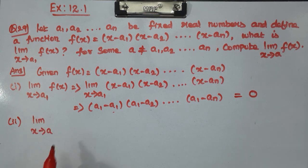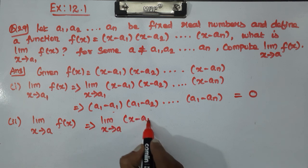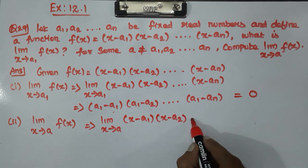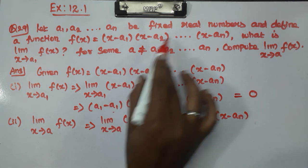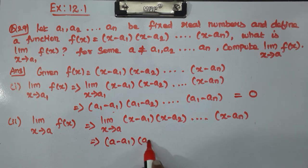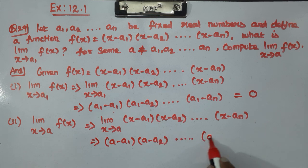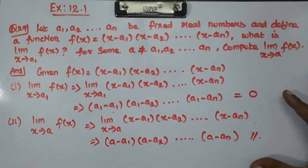Now number 2: find the limit as x tends to a of f(x). Apply the limit as x tends to a of (x minus a1)(x minus a2) up to (x minus an). Substituting x = a gives (a minus a1)(a minus a2)... The question is very difficult, but the answer is very easy.